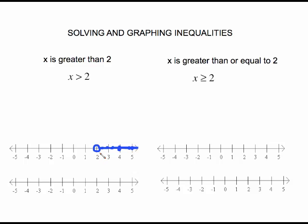A lot of books use, instead of the open circle, an open parentheses with the same kind of shading idea. Both of these are acceptable depending on your instructor, your book, your class — so both of those mean the same thing. This open parentheses would need to be facing this way because we are shading this way.